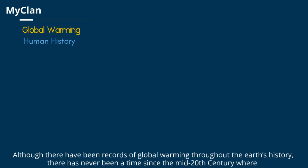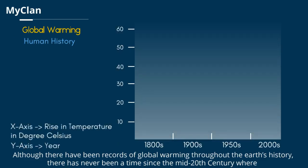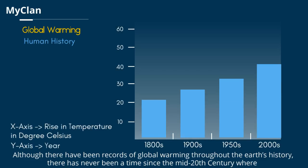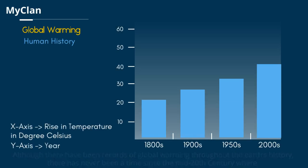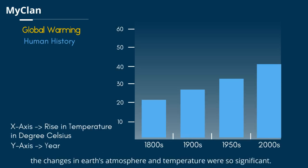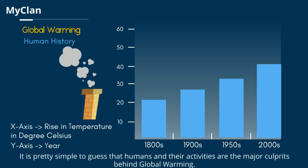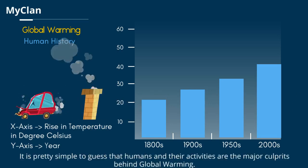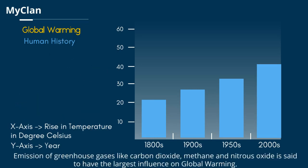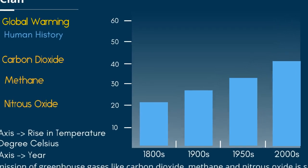Although there have been records of global warming throughout Earth's history, there has never been a time since the mid-20th century where the changes in Earth's atmosphere and temperature were so significant. Humans and their activities are the major culprits behind global warming. Emission of greenhouse gases like carbon dioxide, methane, and nitrous oxide is said to have the largest influence on global warming.